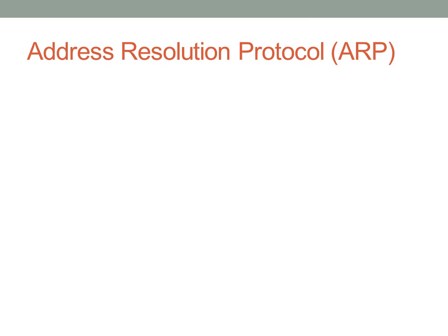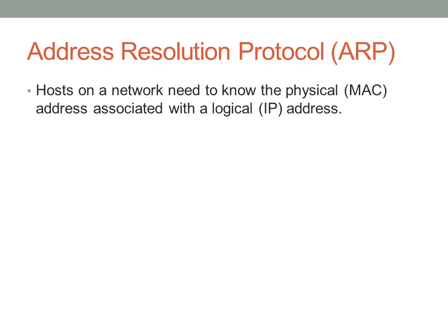Now we're going to start talking about the helper protocols. The first one is ARP, which solves the problem of mapping a MAC address — a physical address — to a logical address, because MAC addresses are excessively hard to remember. If we could remember all MAC addresses in the world we wouldn't need IP addressing. The whole point of IP addressing is to provide a more logical address that humans can use to map devices into networks. ARP is responsible for taking a known IP address and converting it to a known MAC address.